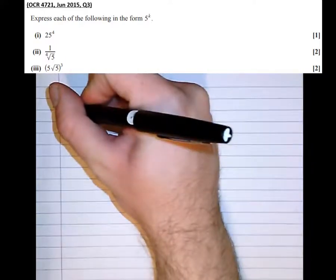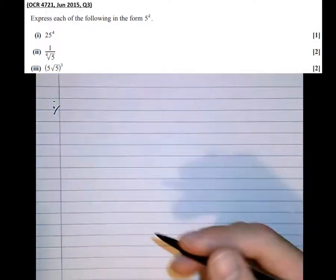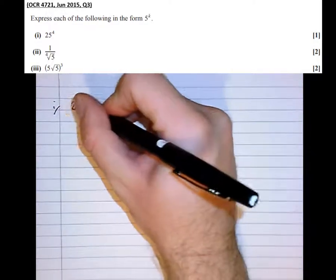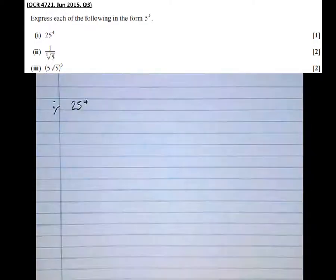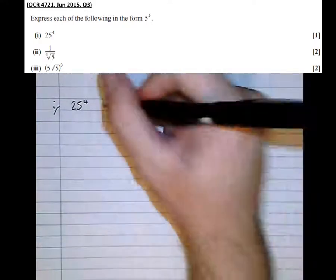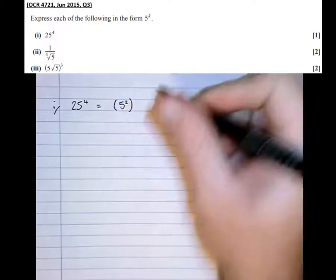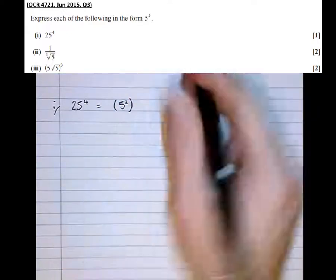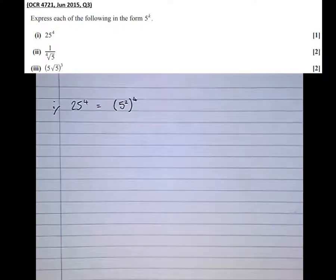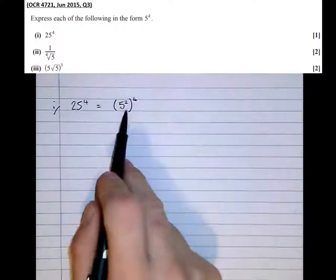So part 1, we've got 25 to the power of 4 and we want to make that as a power of 5. Well first of all, we can rewrite 25 as 5 squared. So that's 25, 25 to the power of 4. So those are both exactly the same.